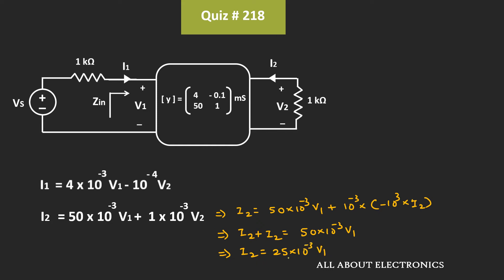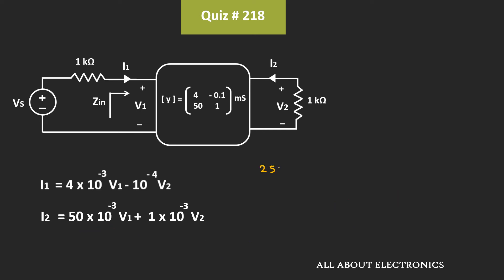Now, if we put the value of i2 back into the second expression, we can write 25×10⁻³·v1 = 50×10⁻³·v1 + 10⁻³·v2. Simplifying further, we get v2 = −25·v1.